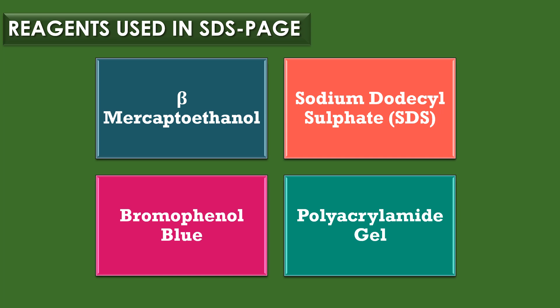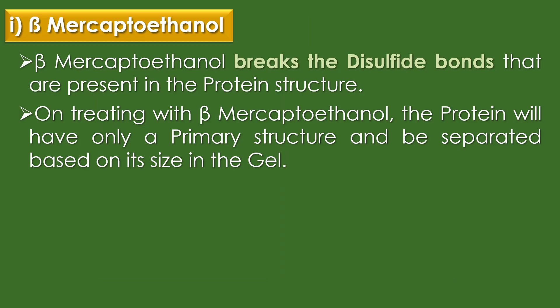Reagents used in SDS-PAGE: four major reagents are used — beta-mercaptoethanol, sodium dodecyl sulfate, bromophenol blue, and polyacrylamide gel. The first reagent is beta-mercaptoethanol. The disulfide bridges present between polypeptide chains are responsible for the secondary structure of protein. Beta-mercaptoethanol breaks the disulfide bonds present in the protein structure, so the protein will have only a primary structure and be separated based on its size in the gel.